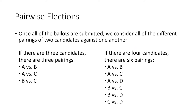Marquis de Condorcet says let's look at pairwise elections. Once everybody has submitted their ballots, we're going to look at all of the matchups of two candidates against one another. If we had three candidates A, B, and C, there would be three matchups: A versus B, A versus C, and B versus C. If we have four candidates, there are six matchups. If there are five candidates, there's more. The more candidates you have, the more of these one-on-one matchups you have to figure out the winners for.